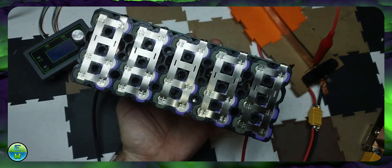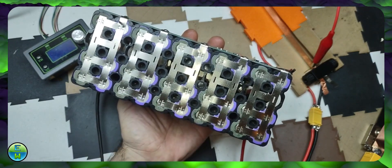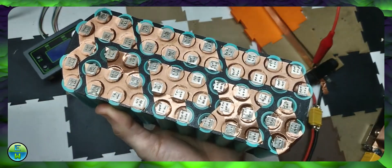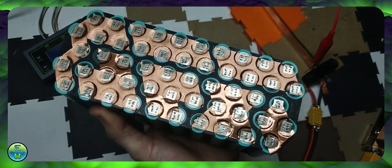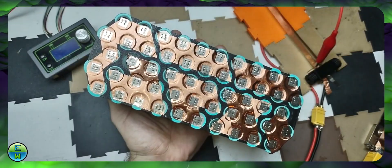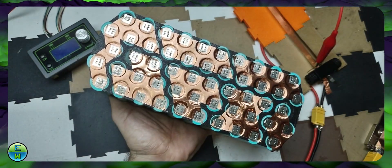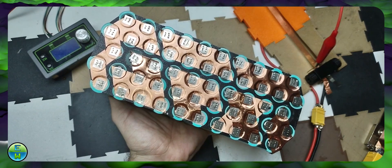This is a 10s 3p lithium-ion battery. You can see it uses nickel as the series conductor. This is a 13s 4p lithium-ion battery and it uses copper as the series conductor. Copper is used because it has a significantly lower resistance than nickel. That means it has a lower voltage drop and can carry a much higher current.